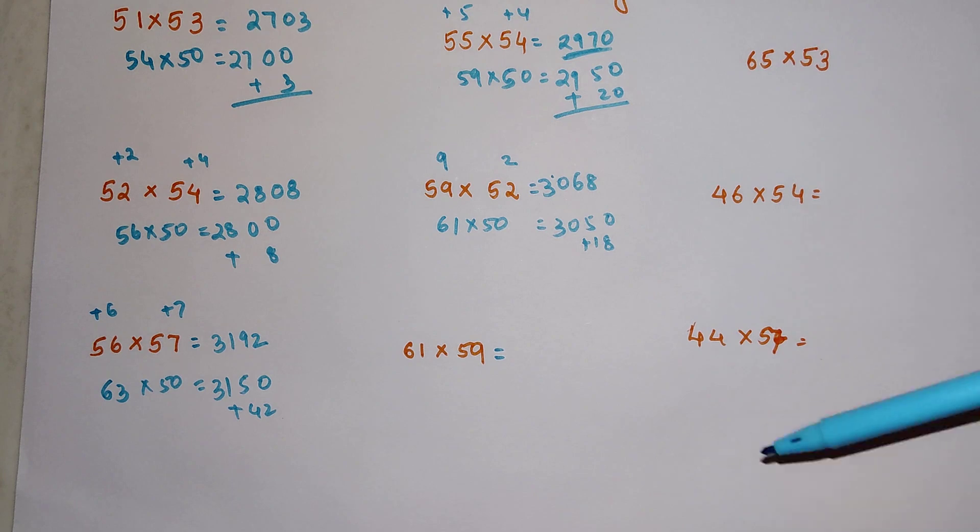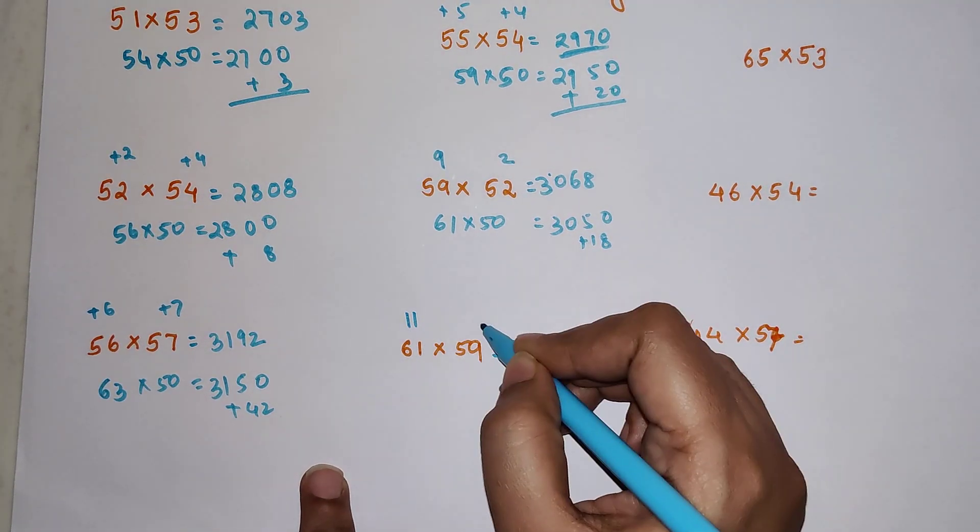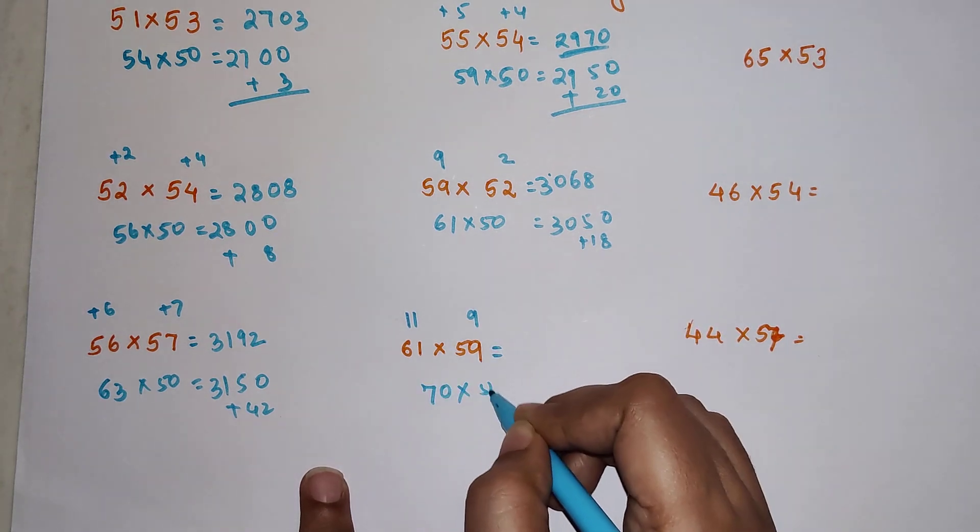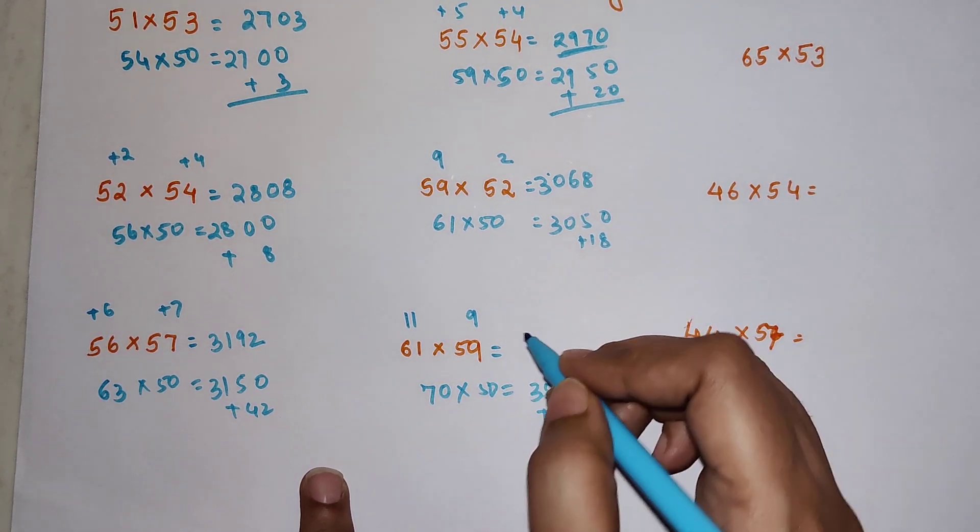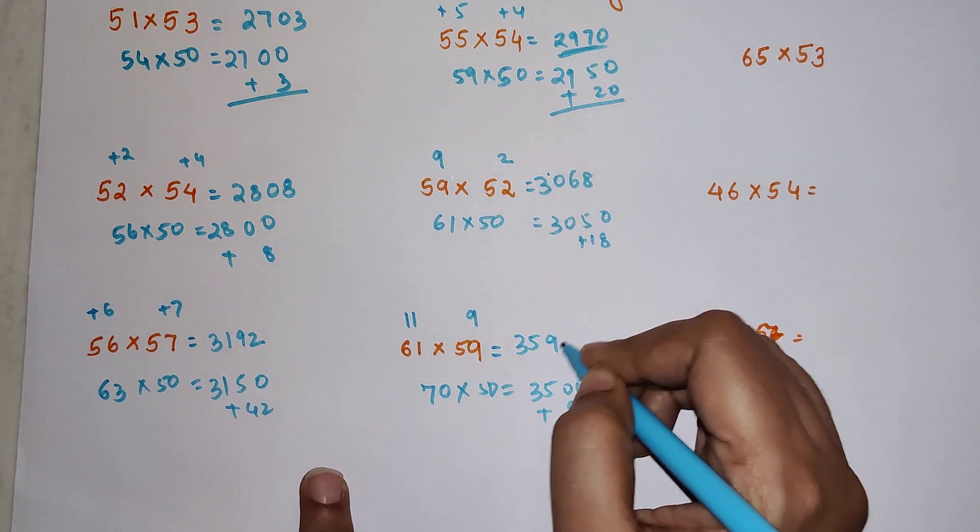Now we're coming to the point where big numbers are involved. This is 11 further away from 50, and this is 9. When you add you get 70 times 50, which is 3500. To that you add 11 times 9, which is 99, giving you 3599.